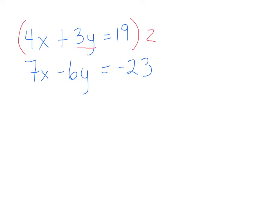As long as you multiply the entire top by a number, you can multiply the entire top by any number you want. As long as you do it to the whole top. Now, when I multiply 2 by the whole top, what do I get? 8x plus 6y equals 19 times 2, which is 38.